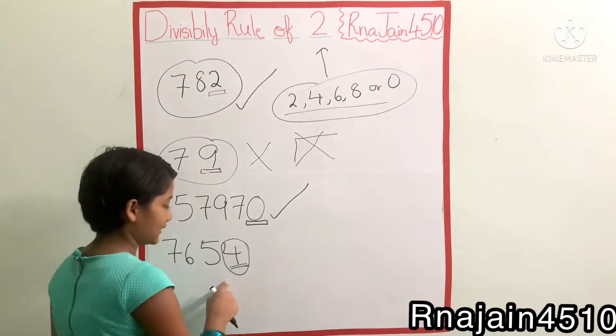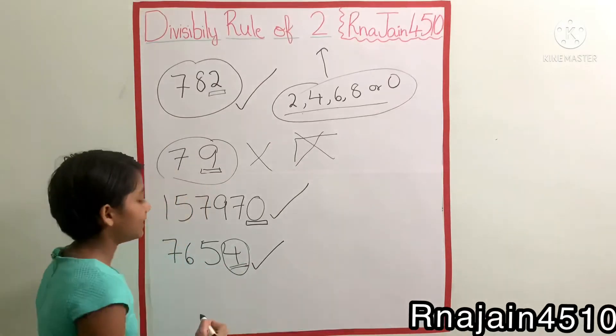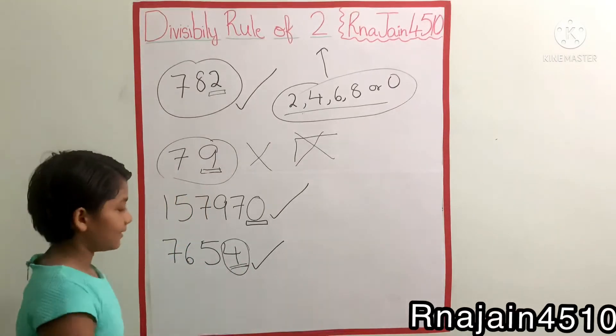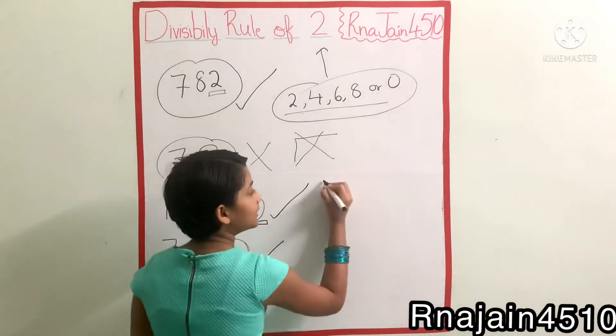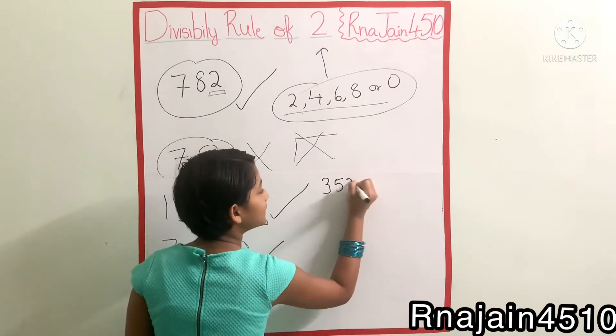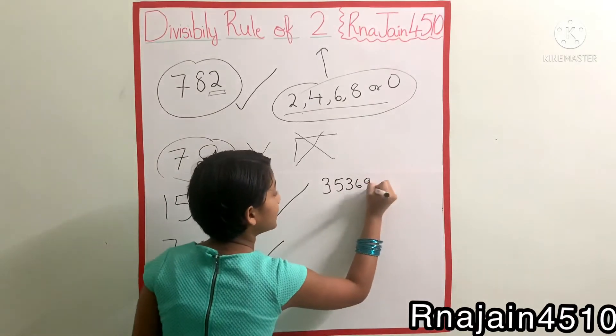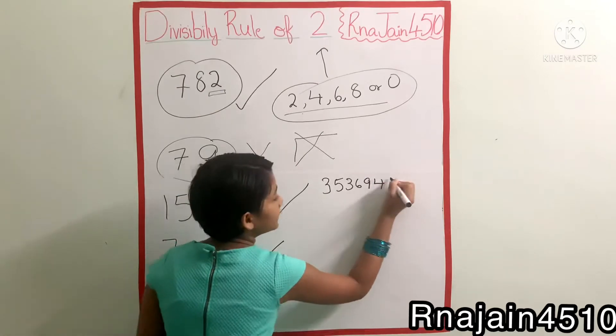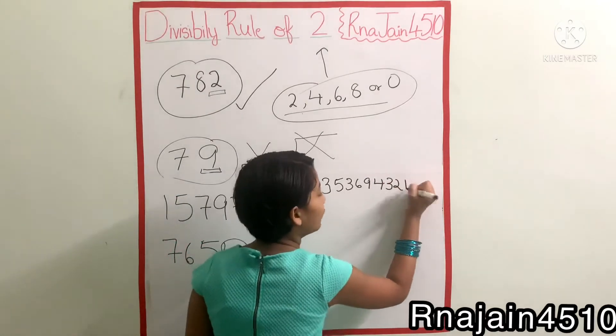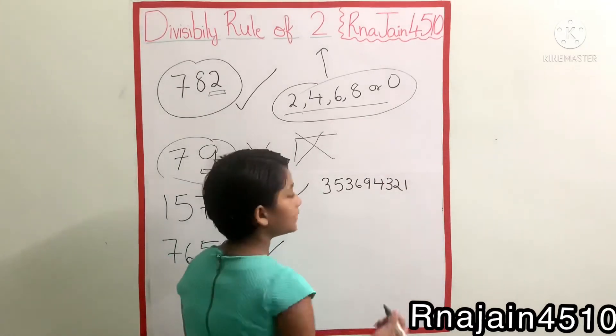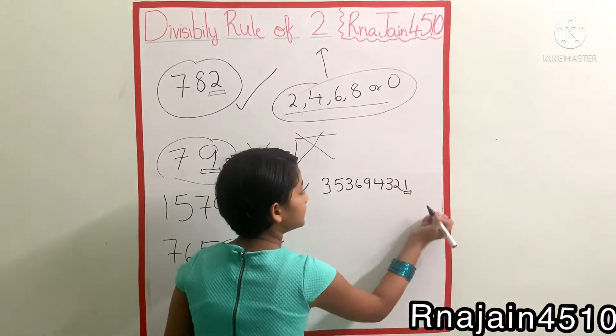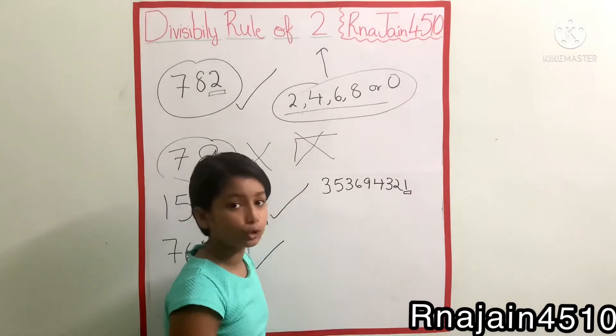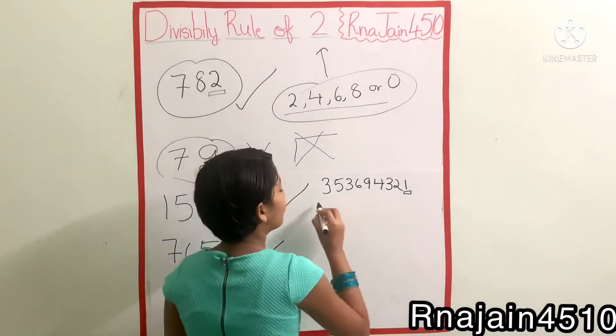Now another number, 353694321. Is it divisible by two? No, it is not divisible by two. Why? Because it does not have this condition, so this is not divisible.